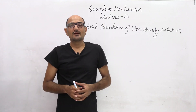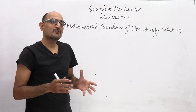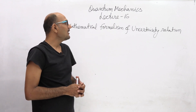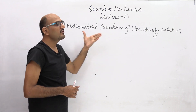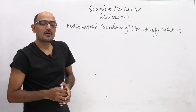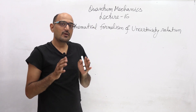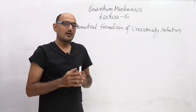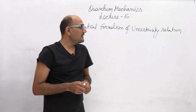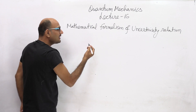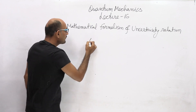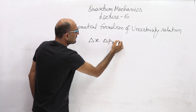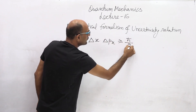Hello students, welcome to the Quantum Mechanics Physics Lecture Series. Today we will take lecture number 16 on the Mathematical Formalism of Uncertainty Principle. In the last class, we had the Uncertainty Principle in detail. We saw that the Uncertainty Principle is an inequality of the form delta x times delta px is greater than or equal to h-cross by 2.